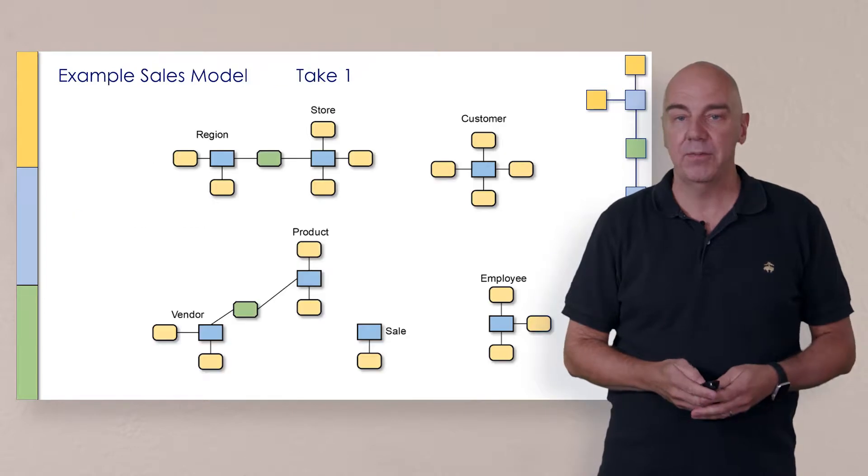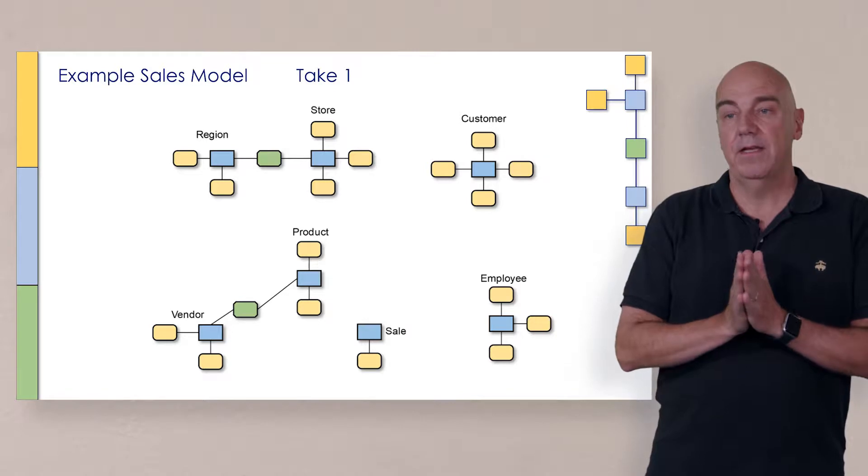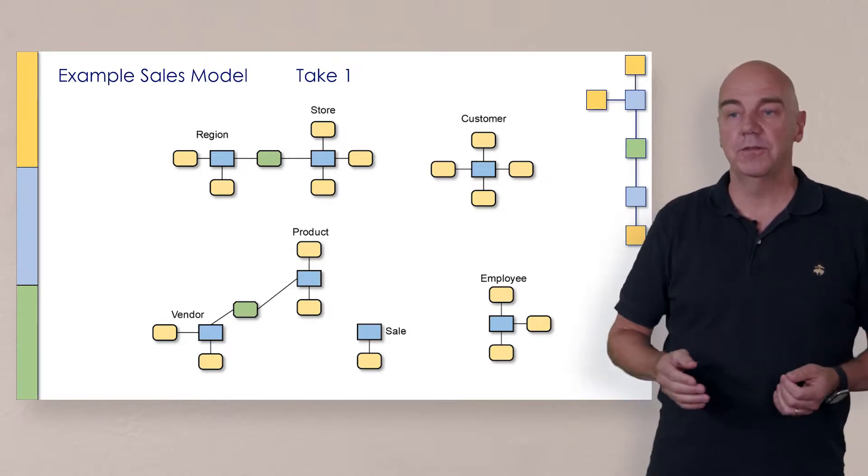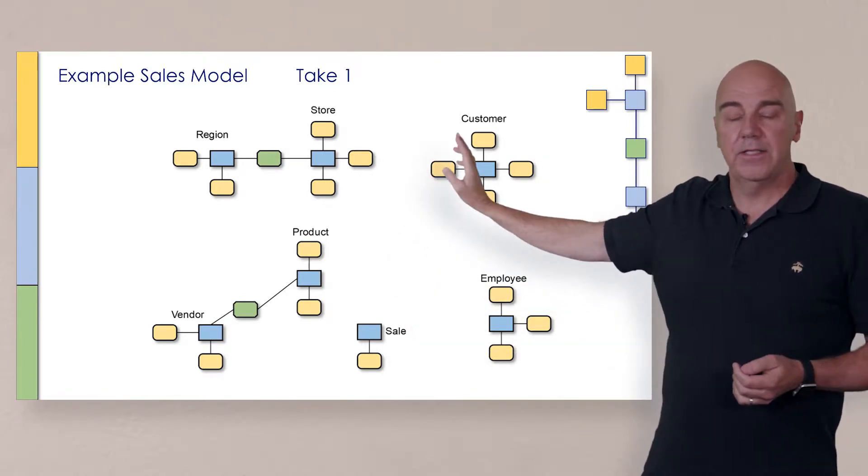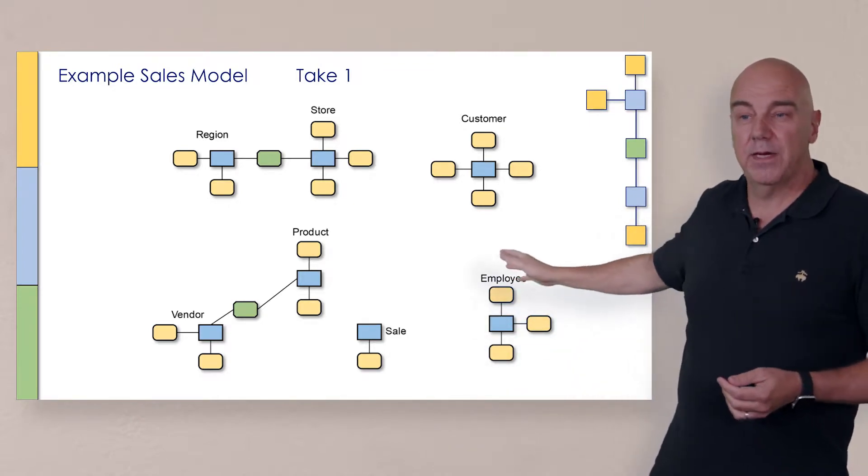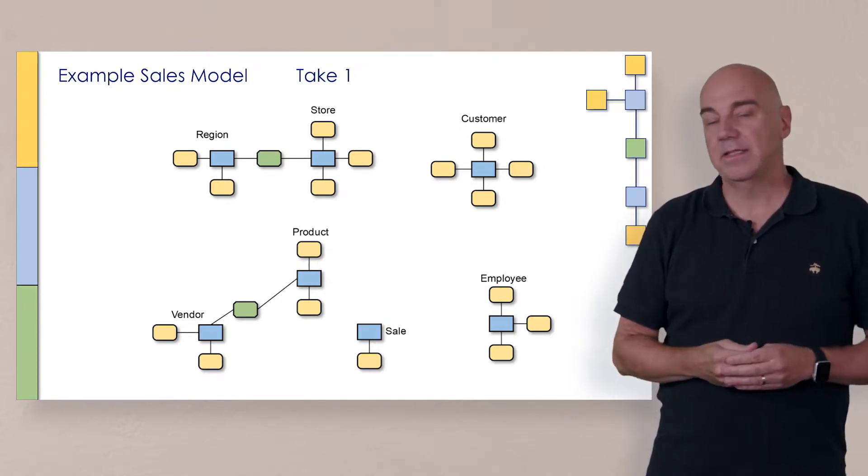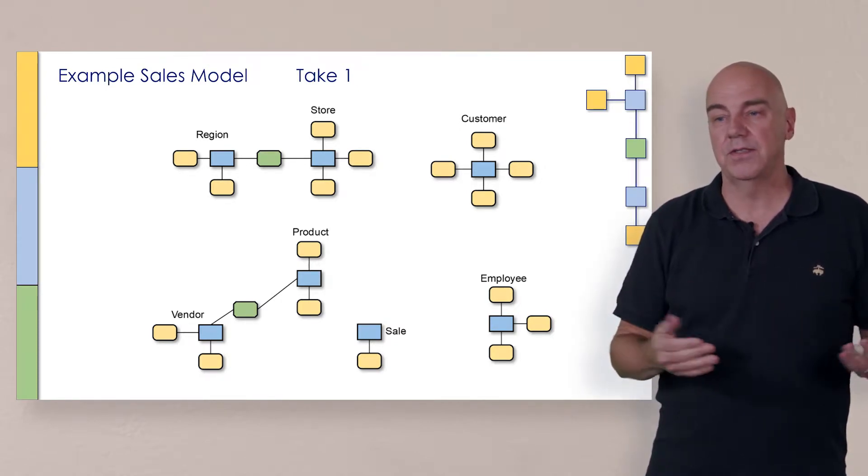So let's go look at an example. Here in the sales example, we've already determined in this picture that store being assigned to region is really separate from the event of the sale. Also likewise, if you look to the bottom, the vendor being assigned to product, that's separate. That's happened really nothing to do with the sale.